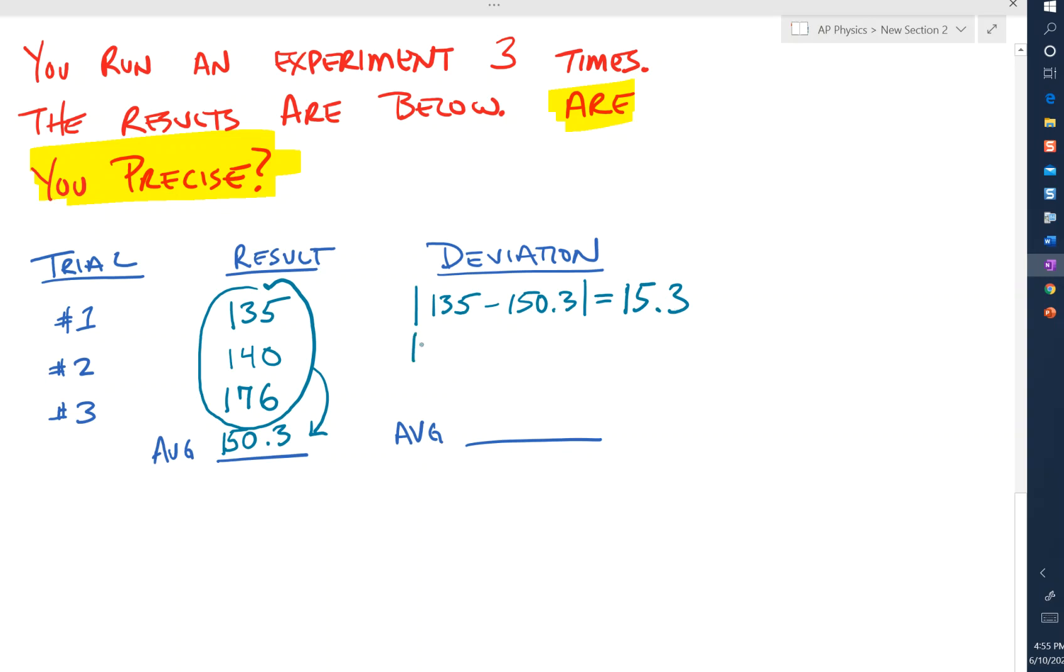So it's going to be 140 minus 150.3. Absolute value of that is going to be 10.3. And then it's going to be 176 minus 150.3. And if I take the average of that, what's that going to be? 25.7.